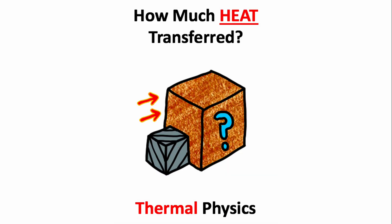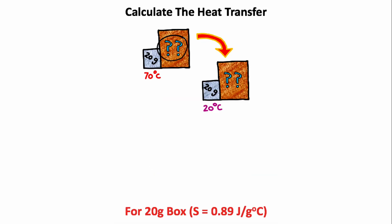An aluminum block with a mass of 20 grams comes into contact with some sort of unknown metal. The block starts at a temperature of 70 degrees Celsius and finishes at a temperature of 20 degrees Celsius. How much heat was transferred from the aluminum block to the unknown metal if we ignore any heat lost to the environment? To solve this problem, I'm going to use the heat transfer equation in thermodynamics, which is mass times specific heat times the change in temperature.